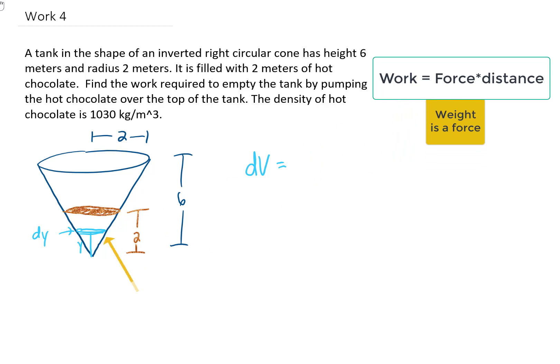Now, we know that the volume of each one of these little slices is just going to be πr² times its width dy. Well, we'd like this to be in terms of y, so we want to get that r out of there and relate that to y.